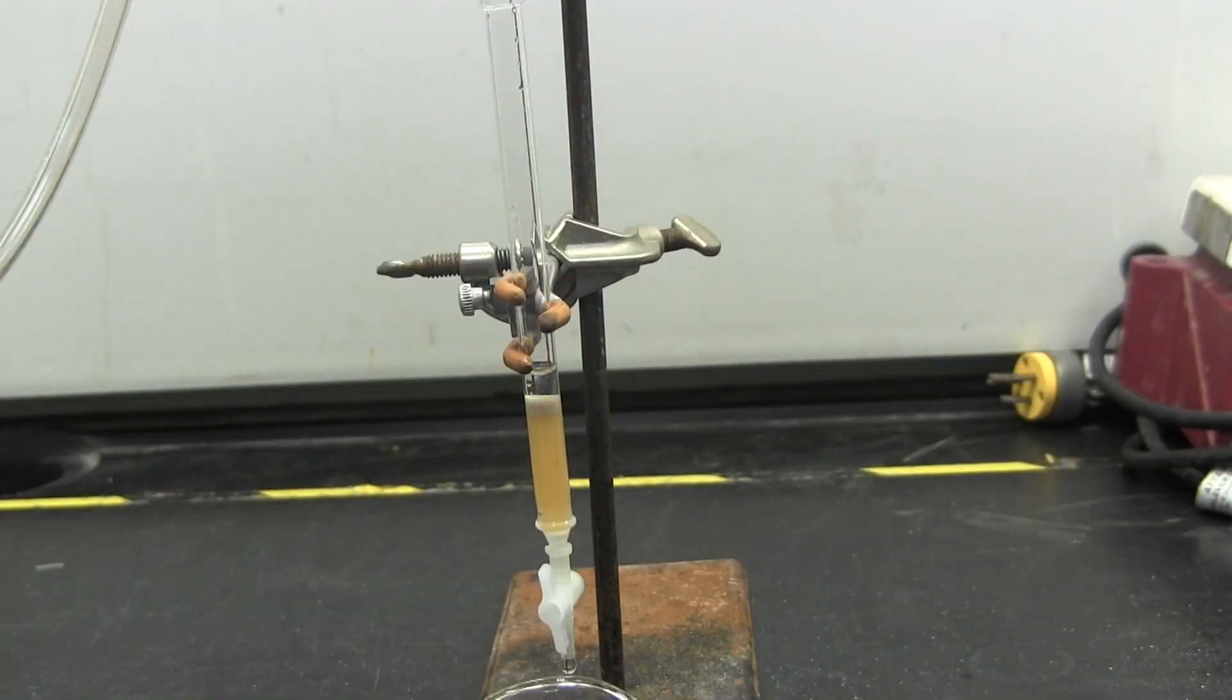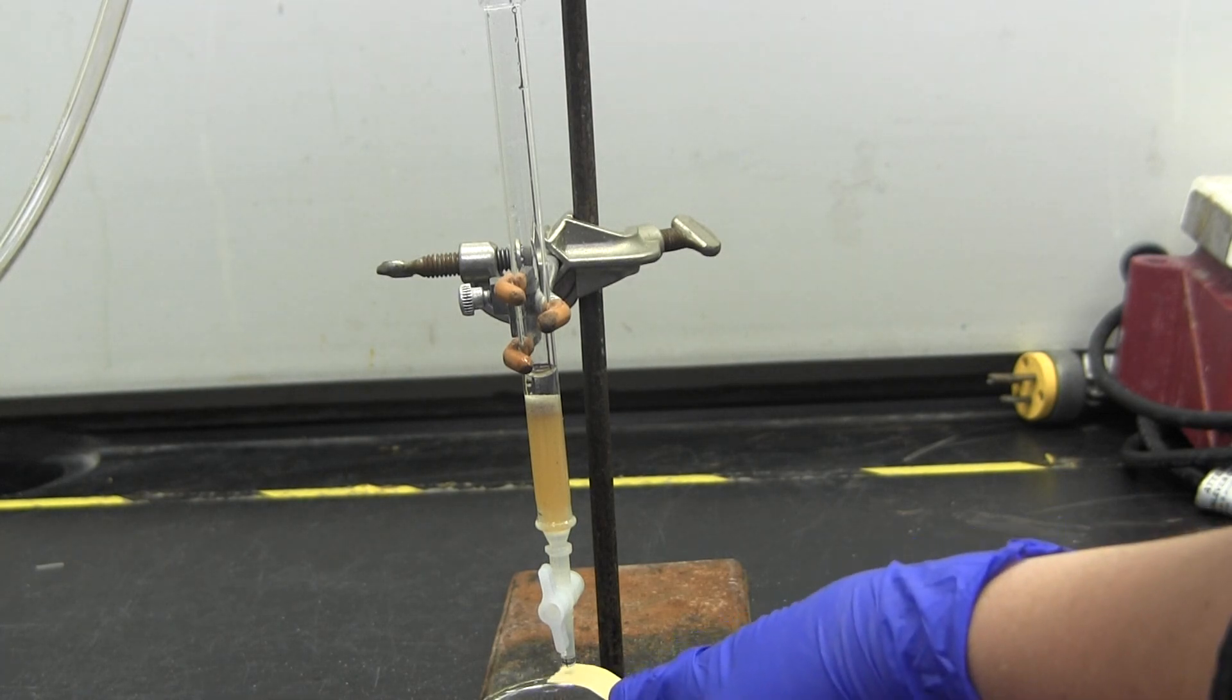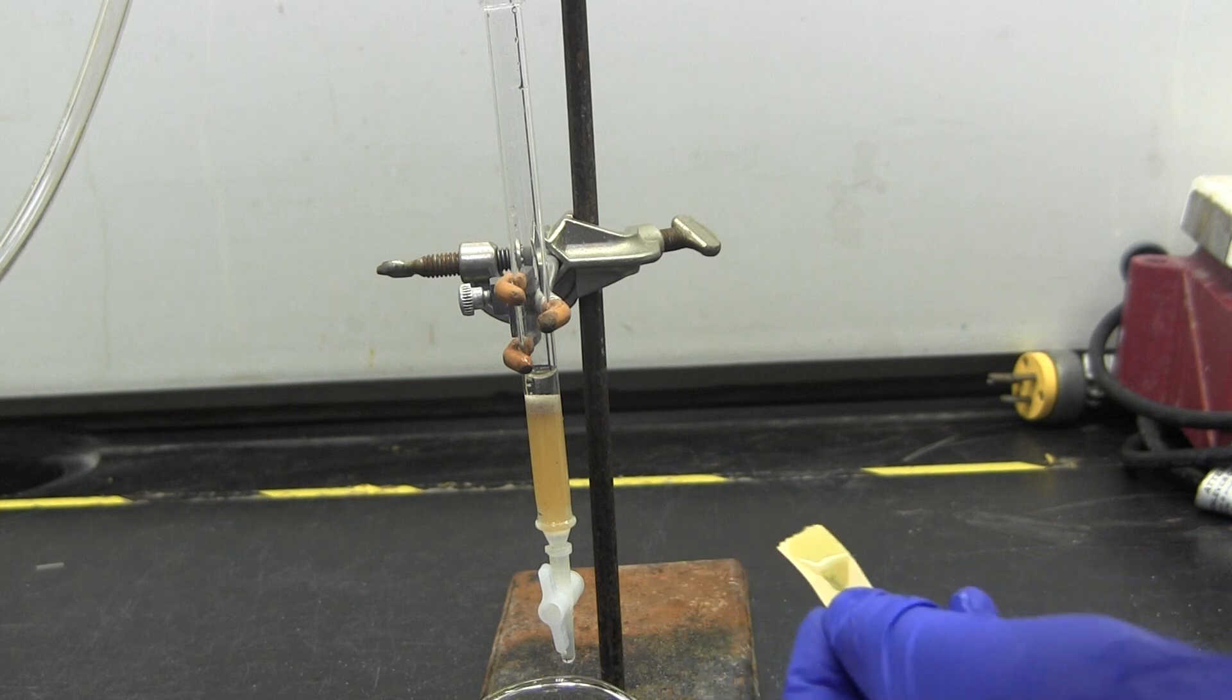Then fill the column with water. You may use the open Y-joint to add liquids, but not solids. Use nitrogen again and push the water carefully through the column. You will run water through the column twice.